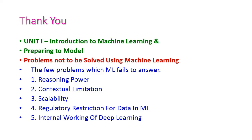So far we have seen the topic of problems which are not to be solved using machine learning, from the first unit, introduction to machine learning. The problems are: reasoning power, contextual limitations, scalability, regulatory restrictions for data, and the internal working of deep learning. In the next class we will see another important topic from the first unit. Thank you.